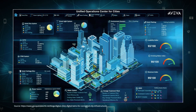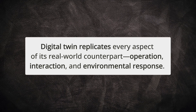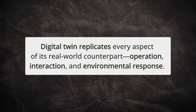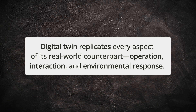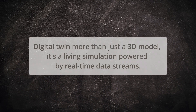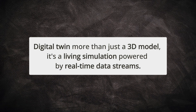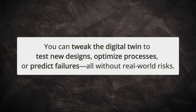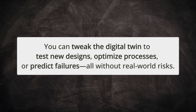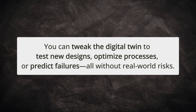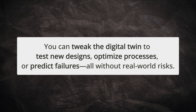From a jet engine to a smart city, a digital twin replicates every part of its real-world counterpart, including its operation and interaction with the environment. It's not just a 3D model — it's a living simulation driven by streams of real-time data. You can tweak the digital twin to test new designs, optimize processes, or predict failures without risking anything in the real world.